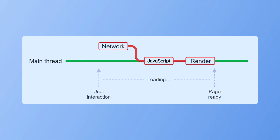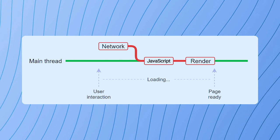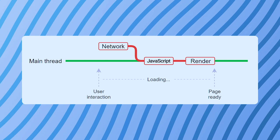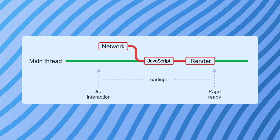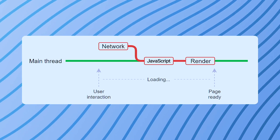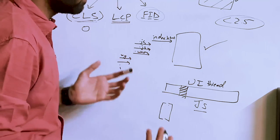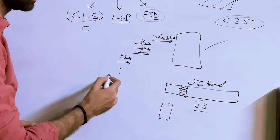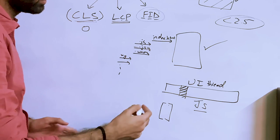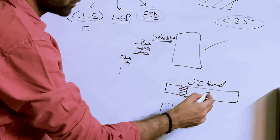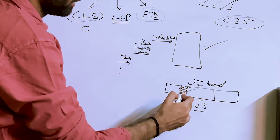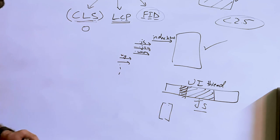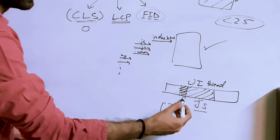This is also called the main thread. Whenever JavaScript is running, it blocks this thread. For small pieces of synchronous code, it blocks for only a few milliseconds, which is not visible to the user. But if you're doing heavy computation — downloading and executing a lot of JS or doing something that blocks the main thread for a long time — that's a bad experience.